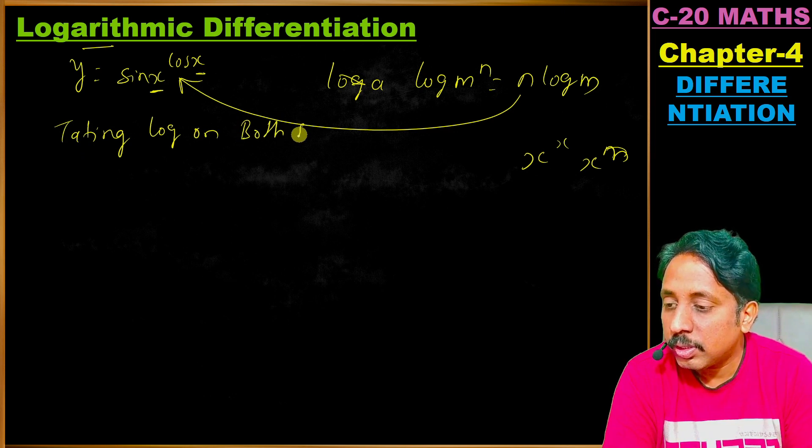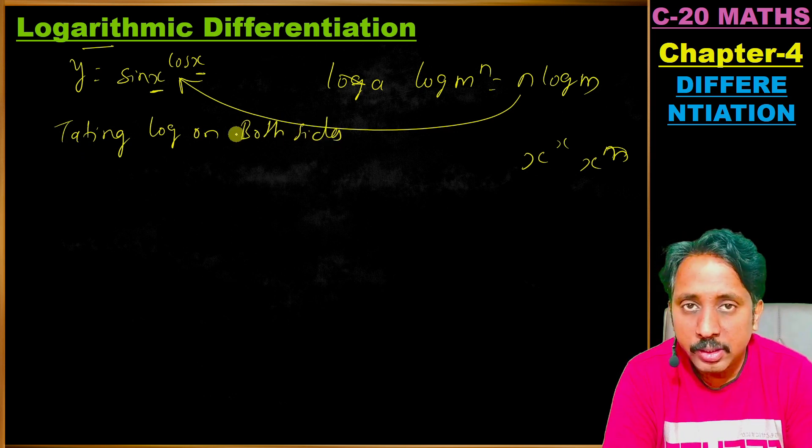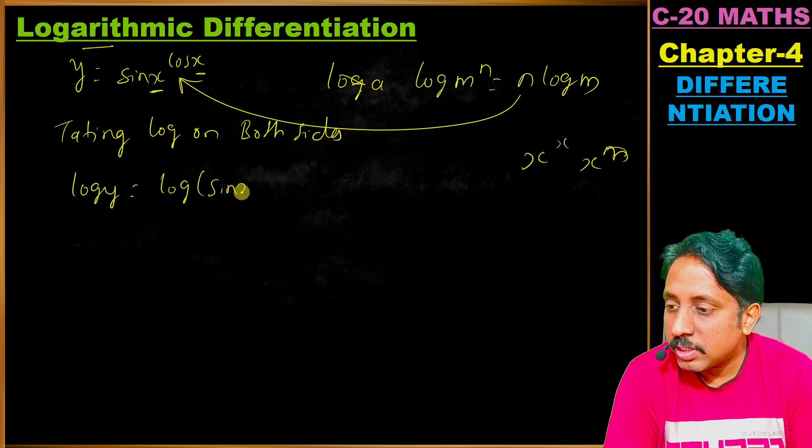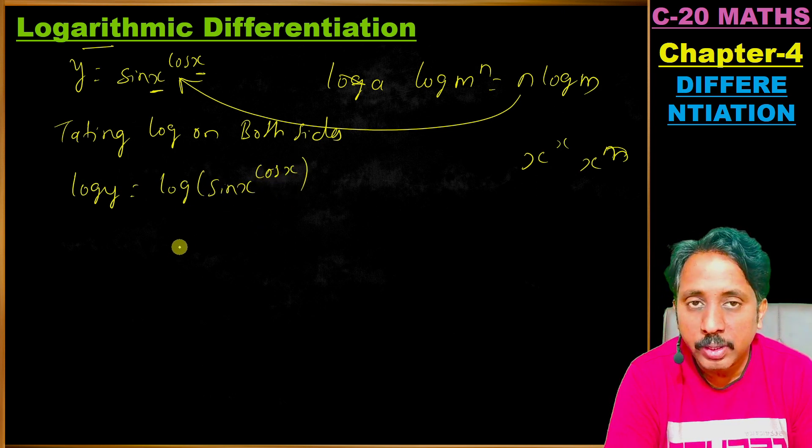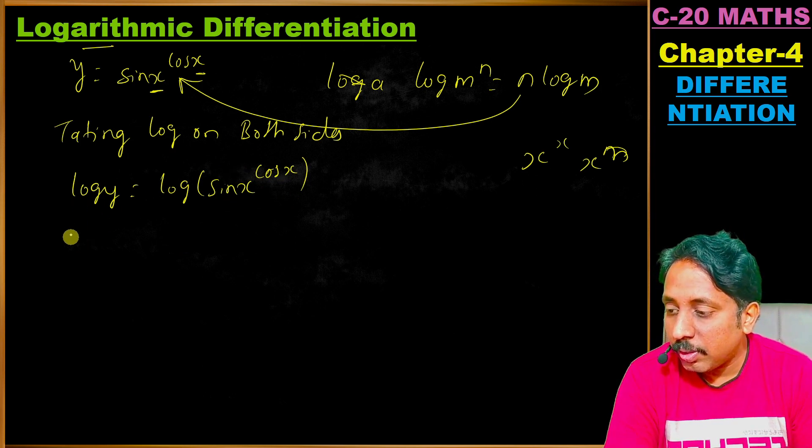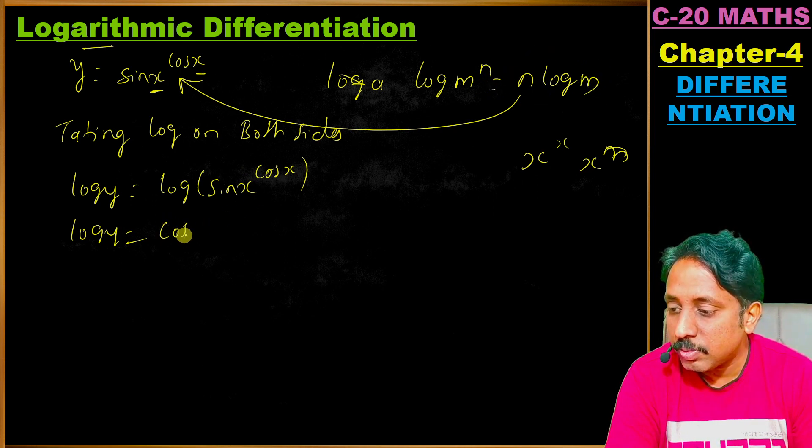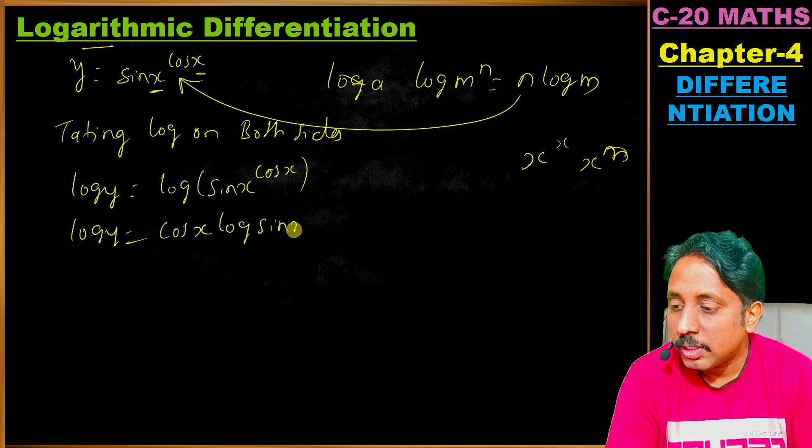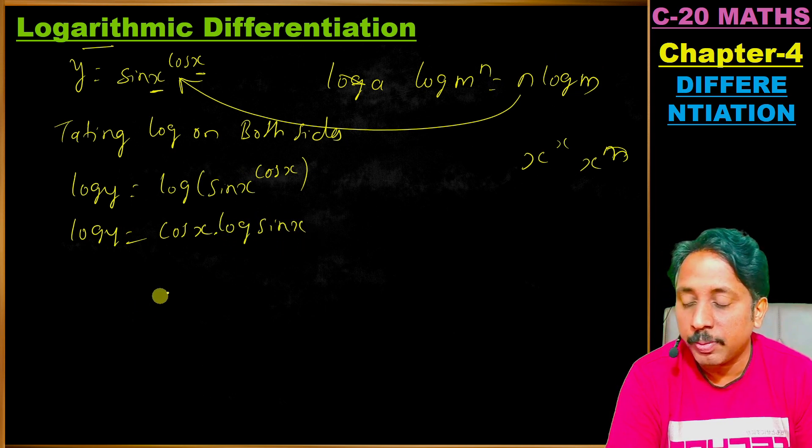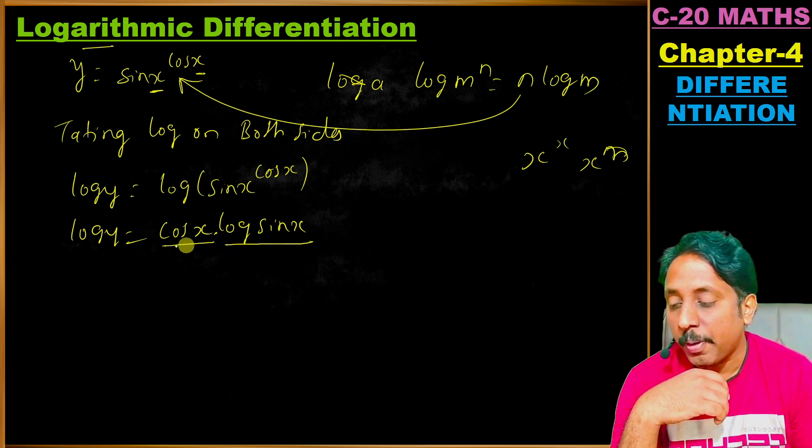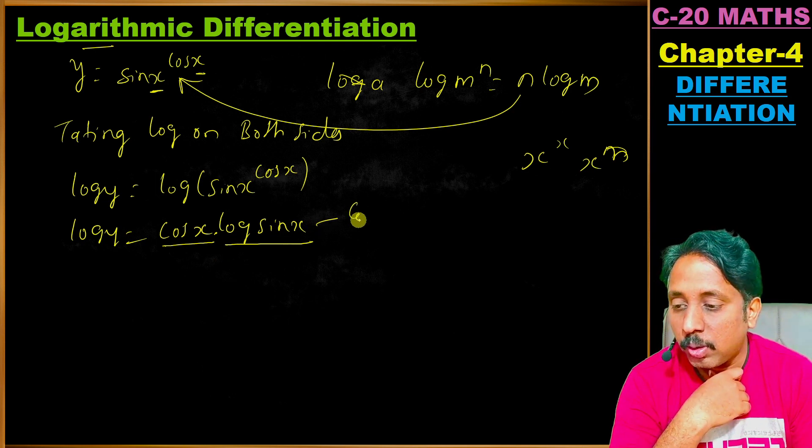Let's take an example: y equals sin x to the power of cos x. So I can write log y is equal to log of sin x to the power of cos x. This becomes cos x times log sin x.